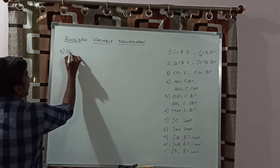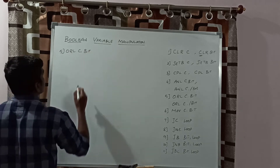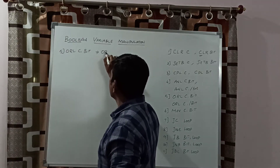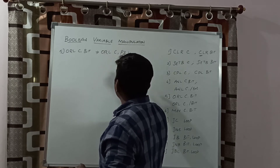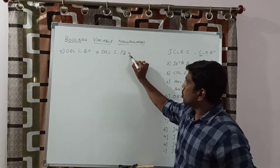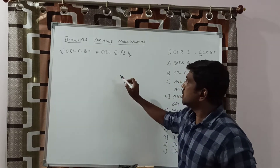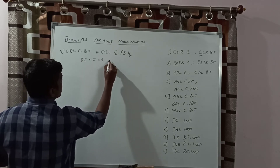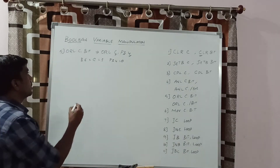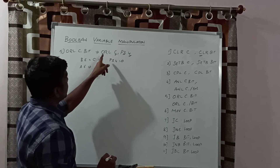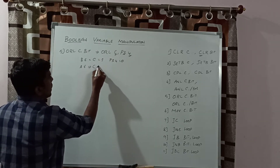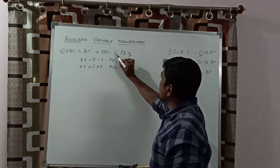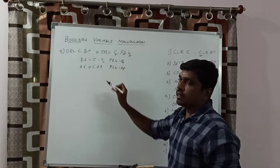The fifth instruction is ORL C, bit, which performs the OR function between two bits. For example, ORL C, P3.4 concentrates on the 4th bit of port 3 with the carry bit. Before execution, carry value equals 1 and P3.4 equals 0. After execution, applying the OR property: 1 OR 0 gives result 1.